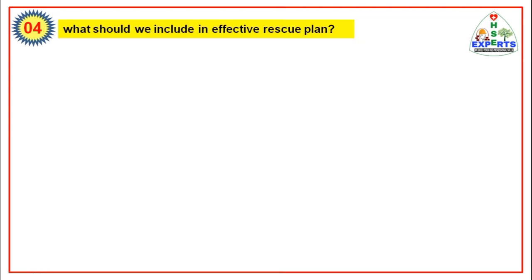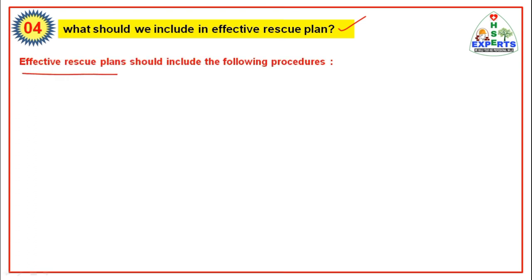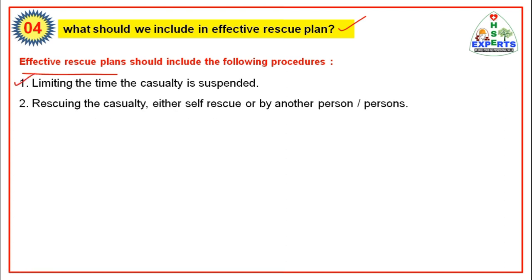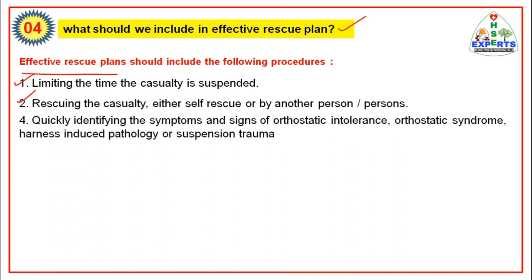Fourth question: What should we include in an effective rescue plan? An effective rescue plan should include the following procedures: limiting the time the casualty is suspended; rescuing the casualty either by self-rescue or by another person; quickly identifying the symptoms and signs of orthostatic intolerance, orthostatic syndrome, harness-induced pathology, or suspension trauma.